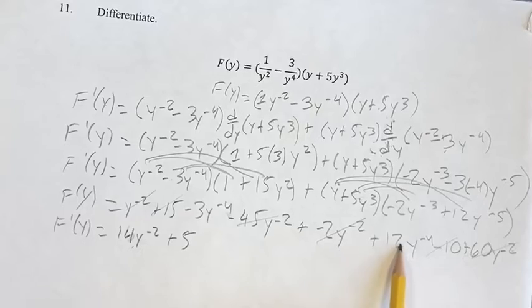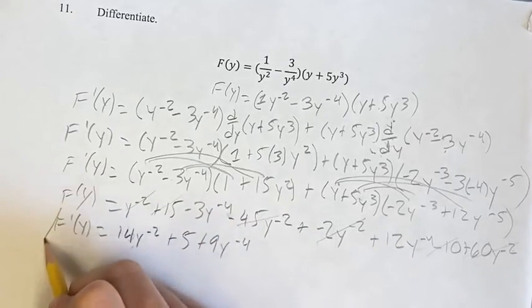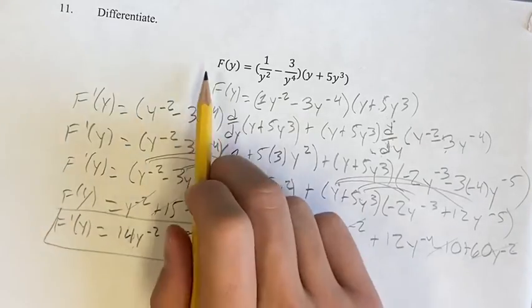And then we have 12y to the negative 4 minus 3y to the negative 4 would be plus 9y to the negative 4. That's going to be your final answer for the derivative of f of y.